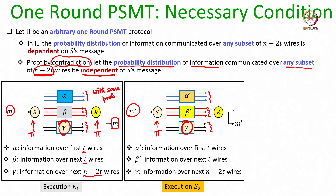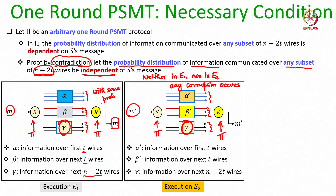In execution E2, even though the receiver receives alpha prime, beta prime, and gamma, and if it runs protocol Pi, it should be able to recover back M prime. In neither E1 nor E2 does any corruption occur — the byzantine corrupt wires do no harm. In E1 the receiver receives alpha, beta, gamma and recovers M; in E2 the receiver receives alpha prime, beta prime, and gamma and recovers M prime.